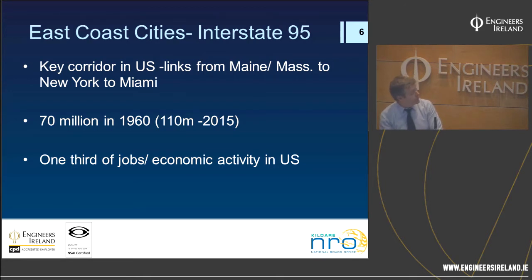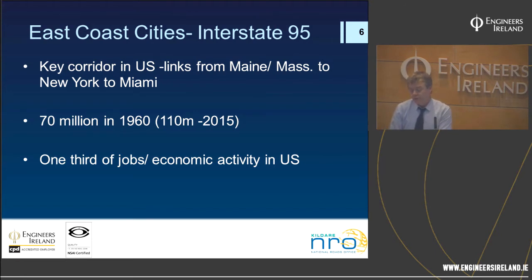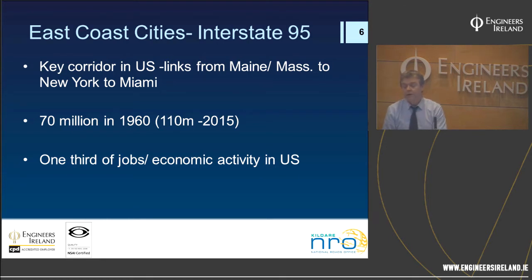Starting on the east coast, Interstate 95 was a key corridor running from Maine and Massachusetts in the north, all the way down to New York, Florida, and Miami. There were 17 million people living on the east coast in 1960, making it a key economic corridor accounting for one third of all jobs and activity in the United States. The development of Interstate 95 in the post-war era was therefore a key requirement.